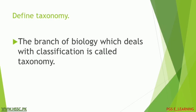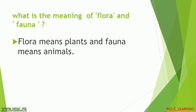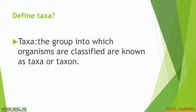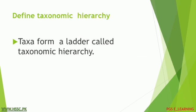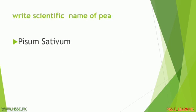Question number three: what are the aims of classification? Question number four: define taxonomy. Question number five: define systematics. Question number six: what is the meaning of flora and fauna? Question number seven: define taxa. Question number eight: define taxonomic hierarchy.